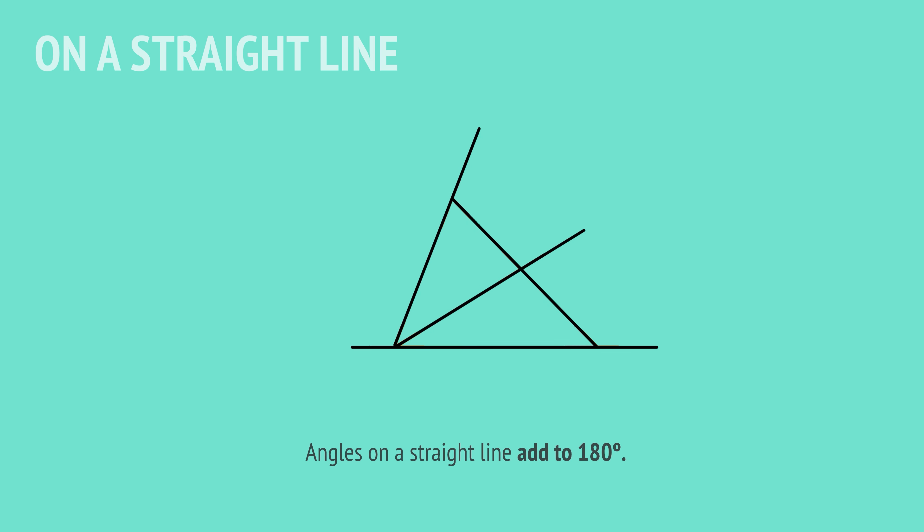With several intersecting lines, we'll be able to identify different angle pairs on straight lines, and we'll know that each pair add to 180 degrees. Here we have three angles on the straight line. So together, these three will add to 180 degrees.